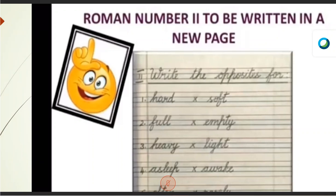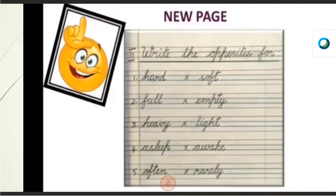And then the third one — heavy. Can you lift a bucket full of water? No, right? It will be too heavy for you to lift. Heavy. Opposite of heavy — light. L-I-G-H-T. Light. It's easy to lift a toy, a box. So light is opposite of heavy.